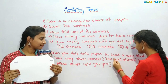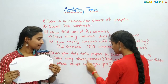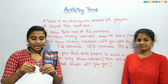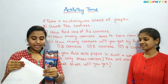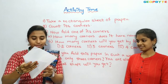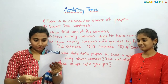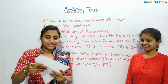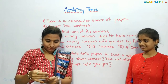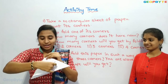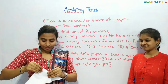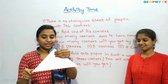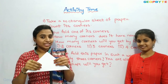Can you fold this paper in such a way that it has only three corners? You are allowed only two folds. What shape will you get? With the first fold and the second fold, I have folded only two times. I got one, two, three — three corners. And I have got the shape of a triangle.